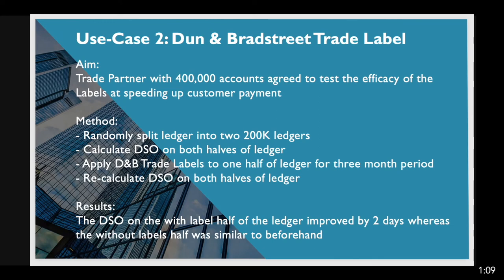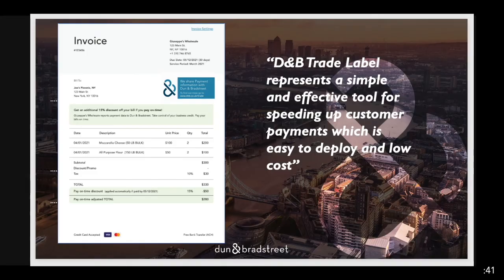One of our partners agreed to split their ledger of 400,000 customers randomly in half, and then calculate the DSO on both halves of the ledger. Then for a three-month period, one half of the ledger had labels applied to their invoices, while the other half remained as they were. At the end of the three-month period, we reassessed the DSO on both halves of the ledger. Our findings were that the side of the ledger that had labels attached showed an improvement in their DSO of two days. This is a strong indication that, rightly or wrongly, if your customers value their credit scores, they will prioritise an invoice that includes our trade payment label. This represents a simple and effective tool for speeding up customer payments, which is easy for you to deploy at a very low cost.